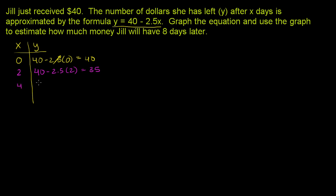After four days, she's going to have 40 - 2.5 times 4. 2.5 times 4 is 10, so 40 - 10 is 30. You see, every two days that goes by, she is spending $5. $5 every two days, or $2.5 every day. And you actually see that right here. She is spending $2.5 every day. Every time you increment x by 1, $2.5 goes away.